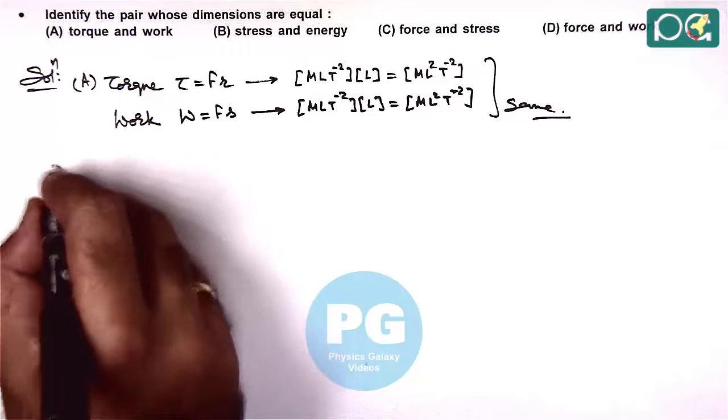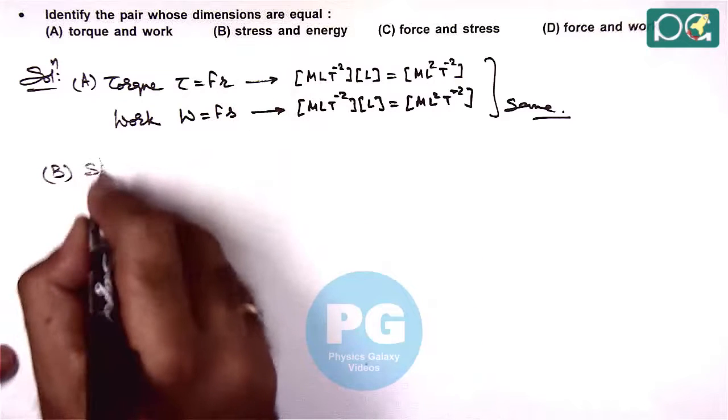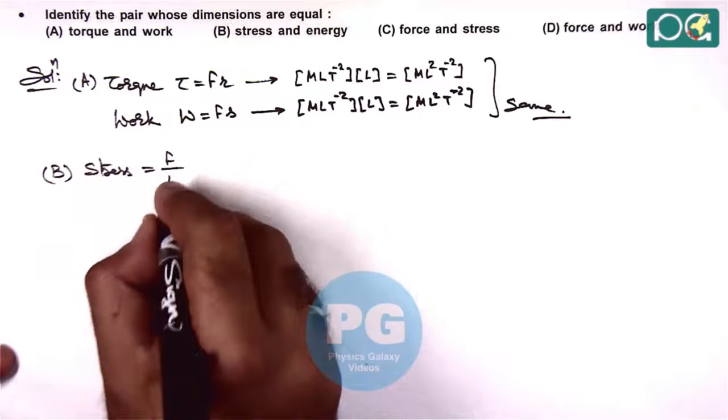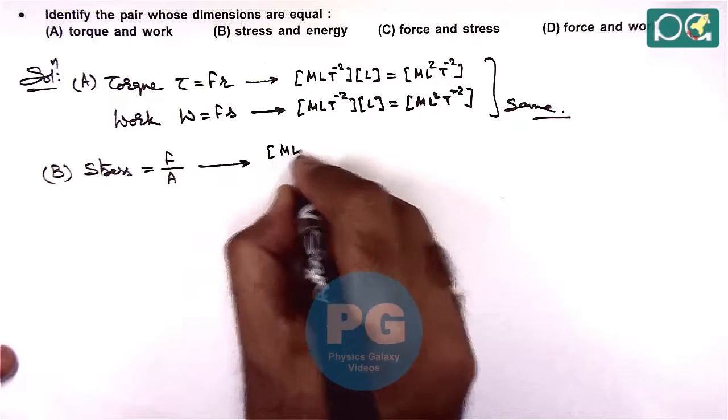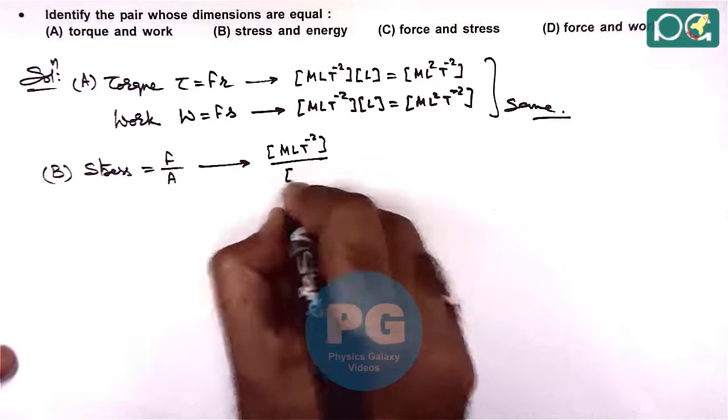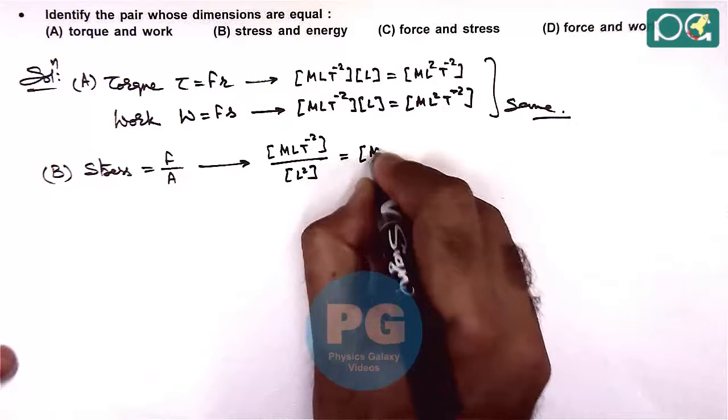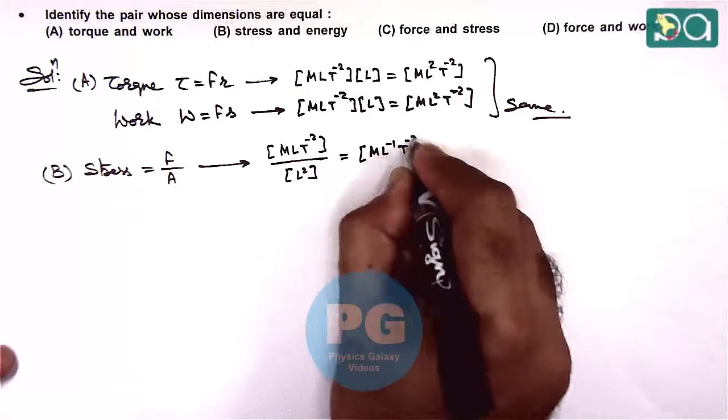For understanding we can check for remaining options also. If we talk about stress, stress is force divided by cross sectional area. So dimension of force is M L T minus 2 and that of area is L square. So this dimension we are getting M L minus 1 T minus 2.